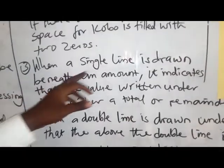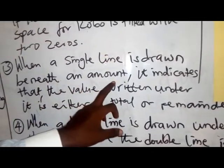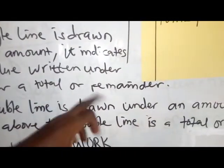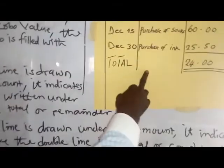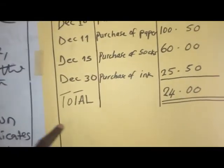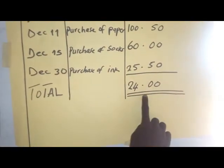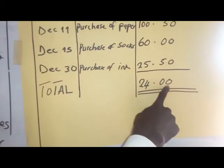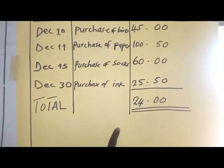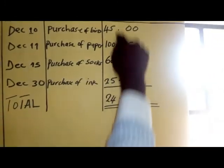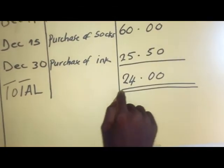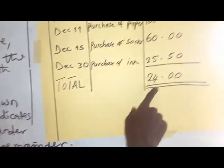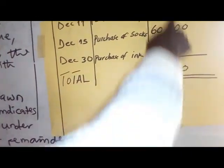Number three: when a single line is drawn beneath an amount, it indicates that the value written under it is either a total or a remainder. For example, the total shown here gives you 24, and the line written below the total indicates that it is a remainder or the total amount.